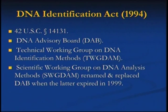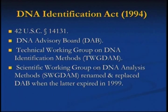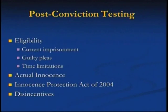The DNA Identification Act is interesting because it's the first time the federal government regulated a forensic science. They had to have regulations because they were afraid of getting junk in the database and generating misidentifications. This legislation also addresses post-conviction testing.